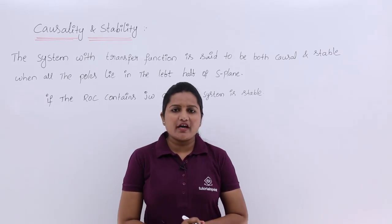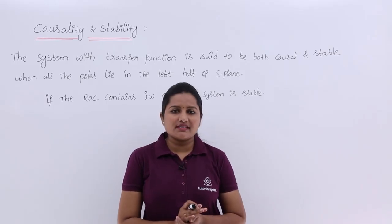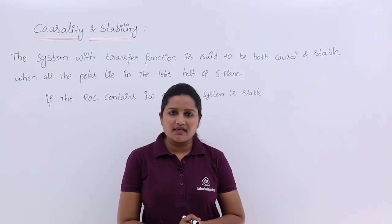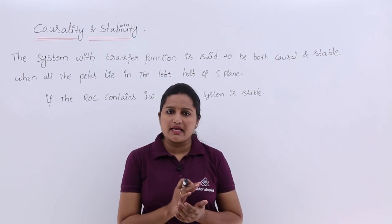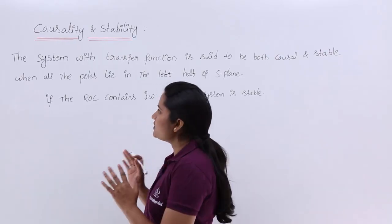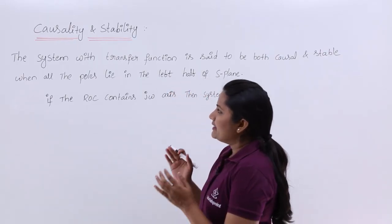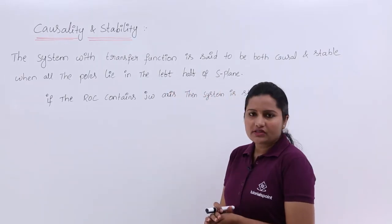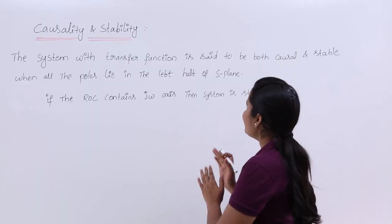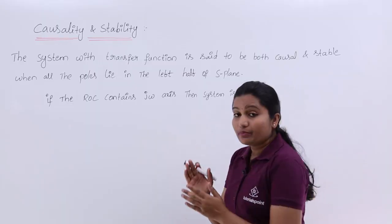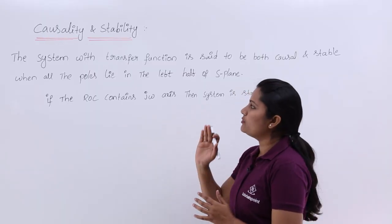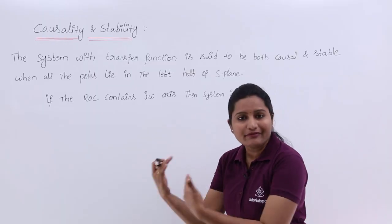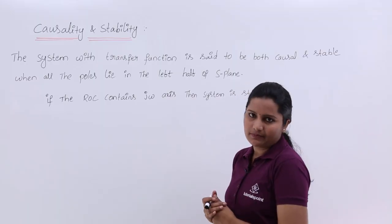In this video we are going to discuss causality and stability in Laplace transform by examining the poles. A system with a transfer function is said to be both causal and stable when all the poles lie in the left half of the S-plane.